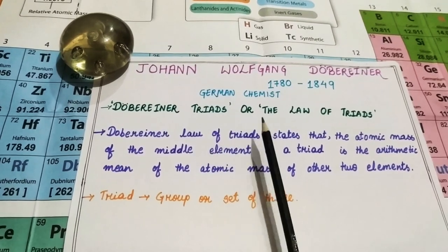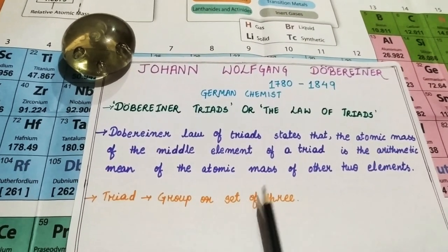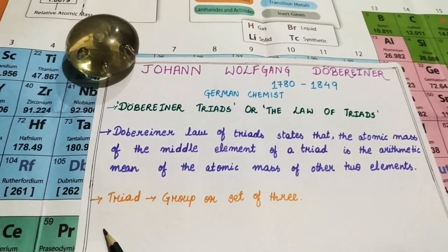Now, let us understand what his statement actually means. Before that, let me just clarify what triad means. Triad is a group or set of three. Any group or set that has three elements in it can be said as triad.